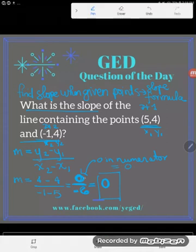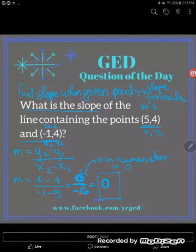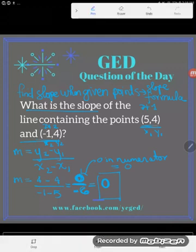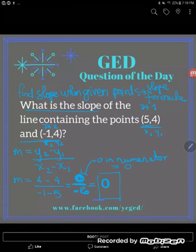Now, be careful, because the zero in the numerator is not the same as the zero in the denominator. The very next problem we're going to look at is what happens when there's a zero in the denominator. But when it's in the numerator, when it's on top, my slope is just zero.